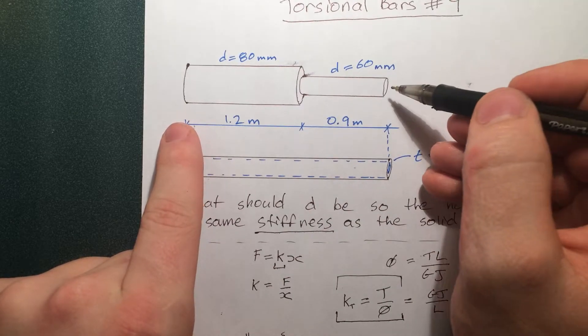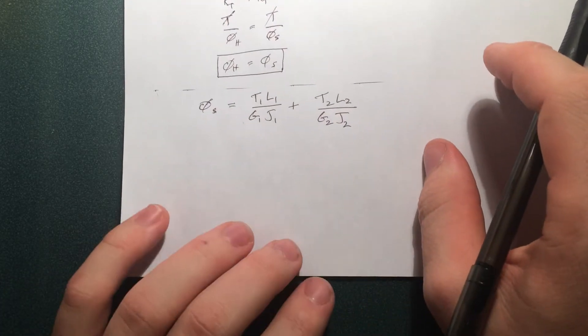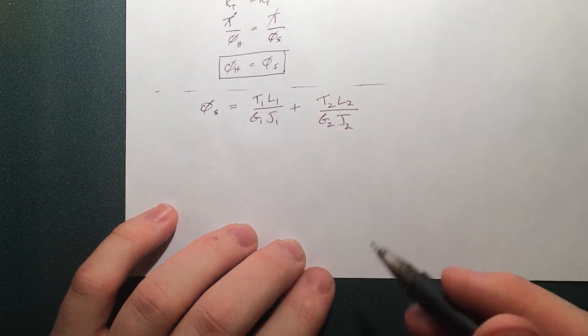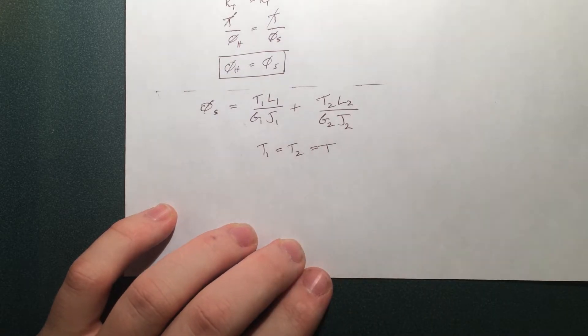You put a force here. No matter where you go on the bar, you're going to feel the same internal force. So we can just say that these two internal forces are equal to T. Or, T1 is equal to T2 is equal to T. Without the whole free body diagram business.